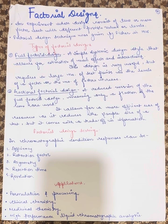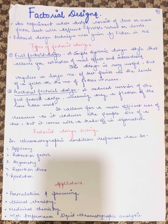Factorial designs can be classified into two types: first is the full factorial design and next is the fractional factorial design. Full factorial design is a simple, systematic design style that allows for estimation of main effects and interactions. This design is very useful but requires a large number of test points as the level or number of factors increases.